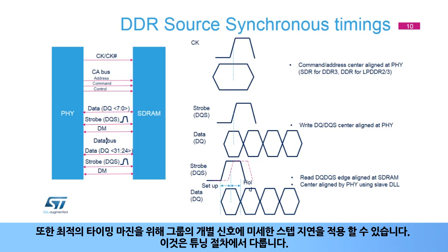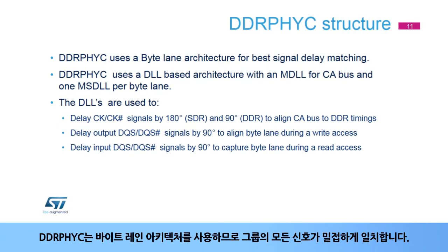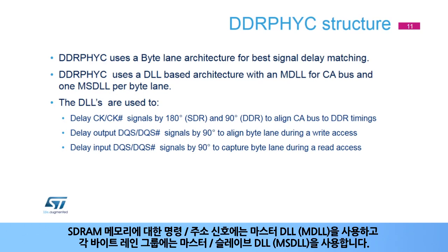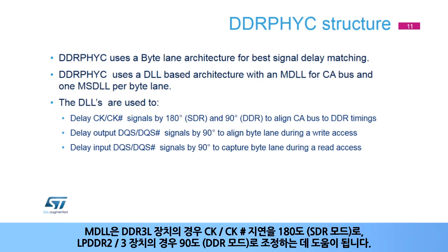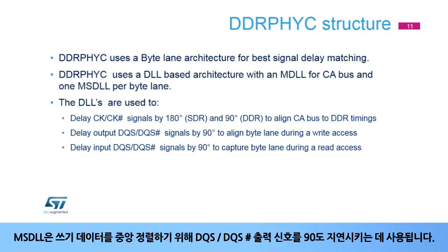This is covered by the tuning procedure. DDRPHYC uses a byte lane architecture so that all signals in a group are closely matched. It uses a master DLL, or MDLL, for command address signals to the SDRAM memory, and a master-slave DLL, or MSDLL, for each byte lane group. MDLL tunes the CK-CK# delay by 180 degrees in SDR mode for DDR3L, and by 90 degrees in DDR mode for LPDDR2 and 3. MSDLL is used to delay DQS and DQS# output signals by 90 degrees to center-align write data, and input signals by 90 degrees to center-align read data.